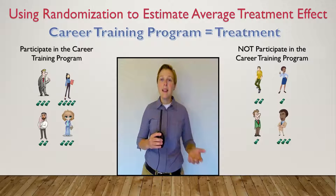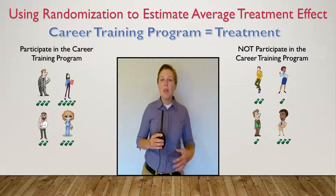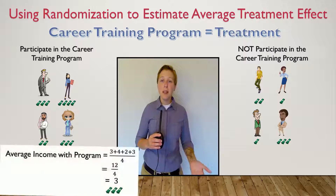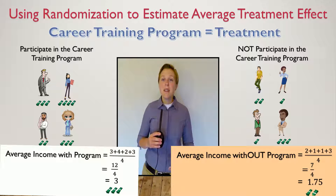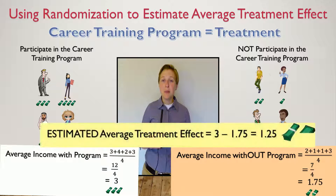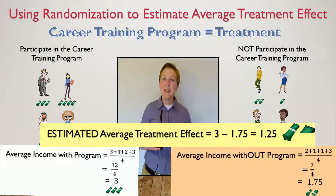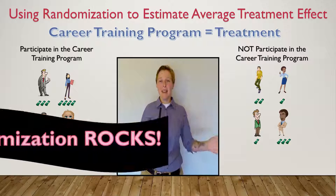At the end of the study, we compare the average income for those that completed the career training program to those that did not complete the career training program. The difference between these groups is our estimated average treatment effect. This sounds awesome, right? Randomization saves the day.